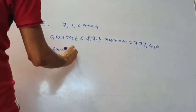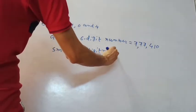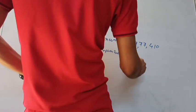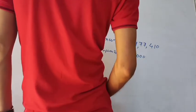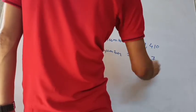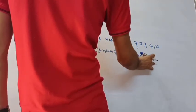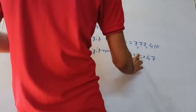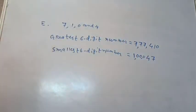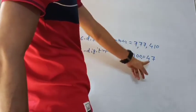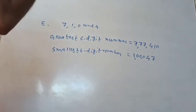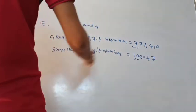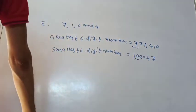For the smallest 6-digit number: we cannot start any number with 0, so 1 becomes the first digit. Then we can use 0 twice, then 4 and 7. So the smallest 6-digit number is 1, 0, 0, 4, 7 — with 0 repeated to fill the 6 digits — giving 100,047. So we repeated 7 for the greatest number and repeated 0 for the smallest number.